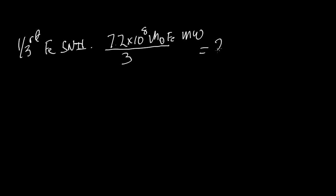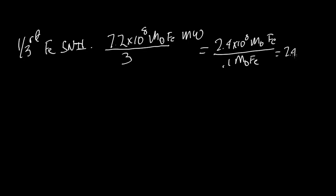We expect about 2.4×10⁸ solar masses of iron formed in Type 2 supernovae. Each one produces a tenth of a solar mass of iron, so in total we need about 2.4×10⁹ such supernovae in the lifetime of the Milky Way to form the iron we see. If we look at the number of stars in the universe, we can check if that seems sensible.